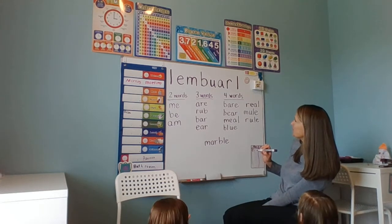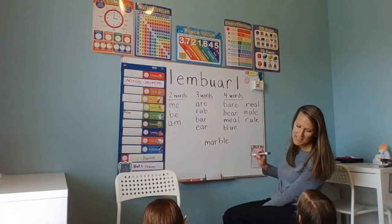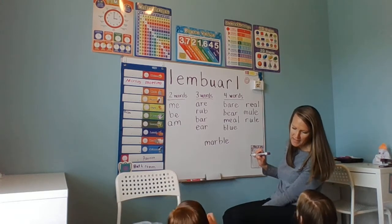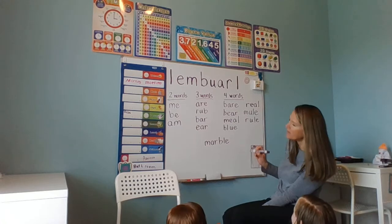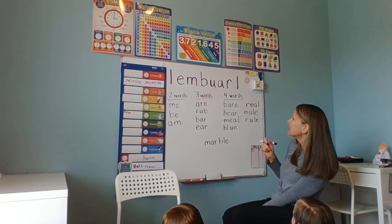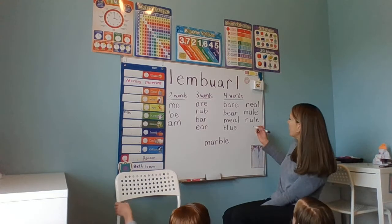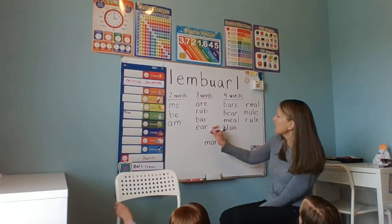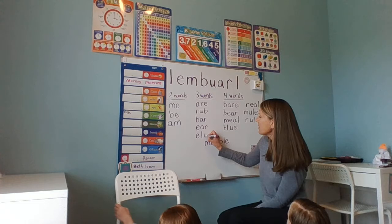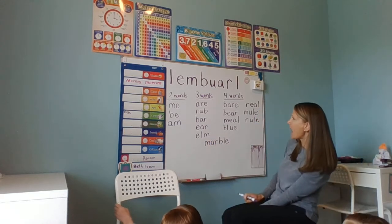Is 'eel' a word? Eel is E-E-L, like the creature in the ocean — but we only have one E, so we can't make that. Back to three-letter words: we could talk about an 'elm' tree — E-L-M.